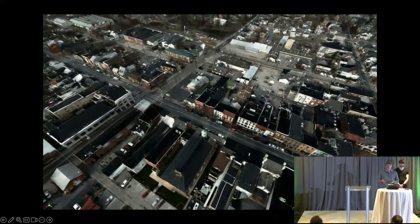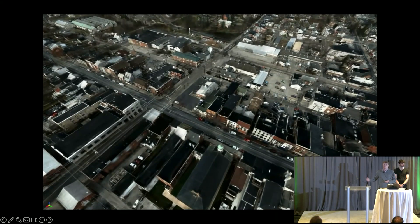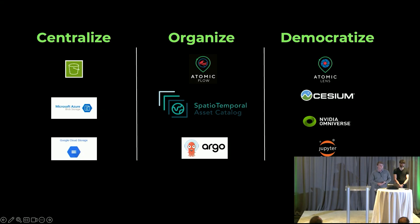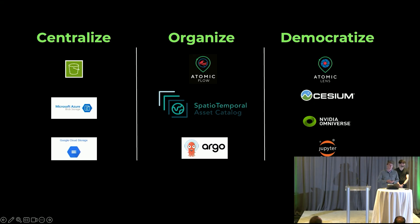We're at Atomic. Our goal is to help companies build out and scale their geospatial capabilities, and to do this in a way that advances open source and open specs, as well as giving these companies the capabilities to use their data in a cloud-native way.